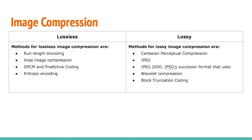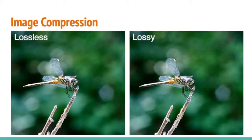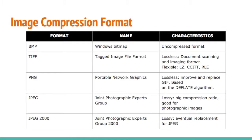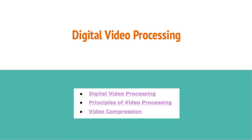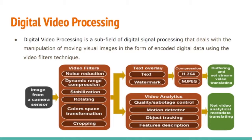Additional lossy compression methods include wavelet compression and block truncation coding. When comparing lossless and lossy compressed images, lossless compression produces clearer images than lossy compression. Common image compression formats include BMP, TIFF, PNG, JPEG, and JPEG 2000.